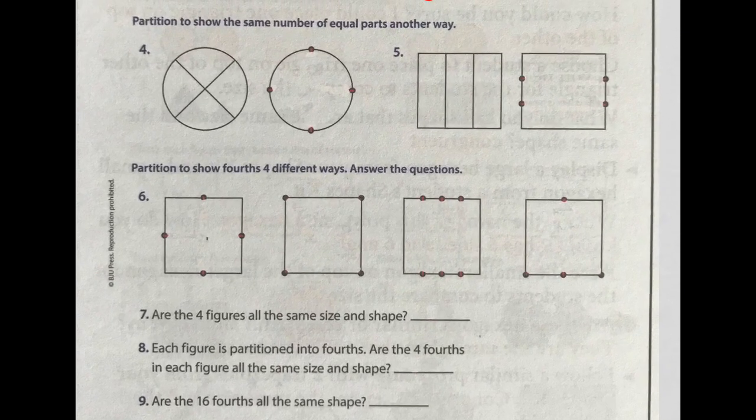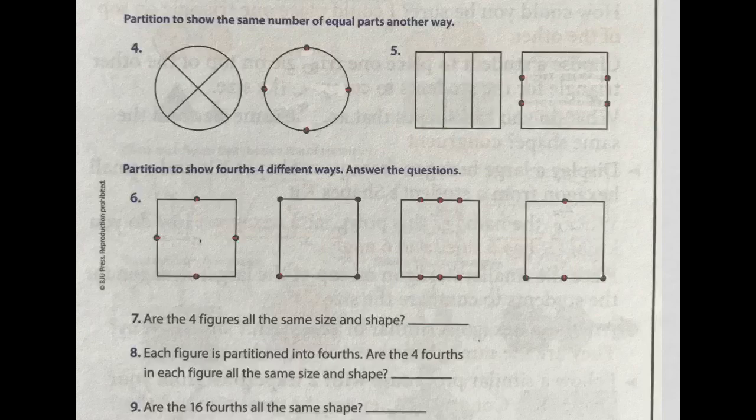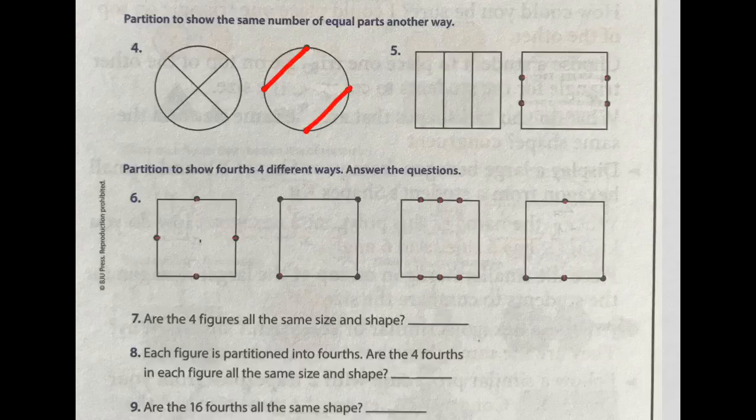For numbers four and five, you're going to partition to show the same number of equal parts, but another way. They do give you the dots to help you. But you have to think about how you are connecting those dots, because each part has to be equal. For number four, can we do this? Would that make four equal parts? No, because this is way small over here. There's this end, and then this is large, and there's really only three parts. So that isn't going to work.